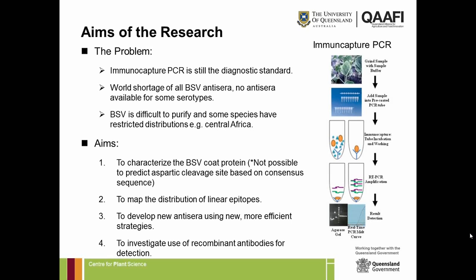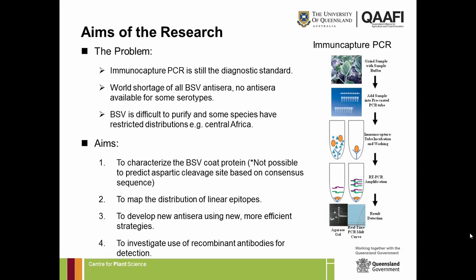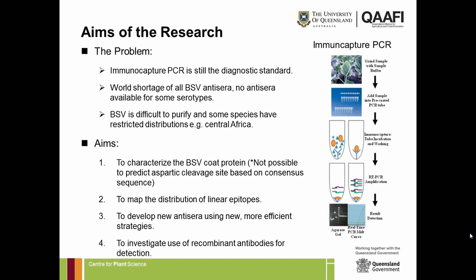However, there's a world shortage of anti-sera to all BSV species, and some serotypes are not represented at all. This is because BSV is extremely difficult to purify, and some species have very restricted distributions — such as Central Africa — where the equipment needed for purification is unavailable. So Jenny set about to characterise the coat protein of banana streak virus. Unfortunately, you can't predict cleavage sites for the aspartic protease theoretically — you have to determine them empirically.